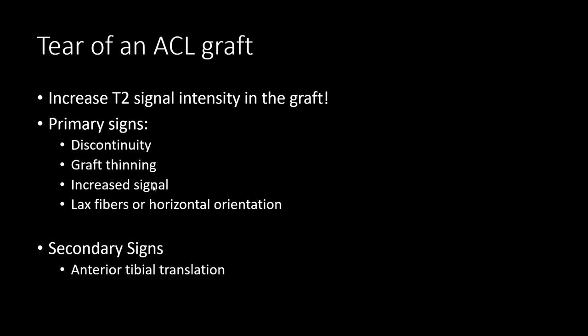The classical primary signs are: obvious discontinuity of the fibers; thinning of the graft, meaning some fibers are torn and no longer visible; and increased signal — though this can be tricky, as we saw in the first video. Signal intensity is not the best indicator, certainly not in the first postoperative year, but it can be important later on after ligamentization is complete.